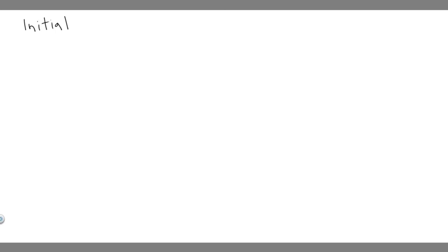There are two parts here: the initial part and the final part. Let's draw what's going on for each. For the initial state, we have the ball traveling to the right at 40 meters per second horizontally — like a pitch coming in.